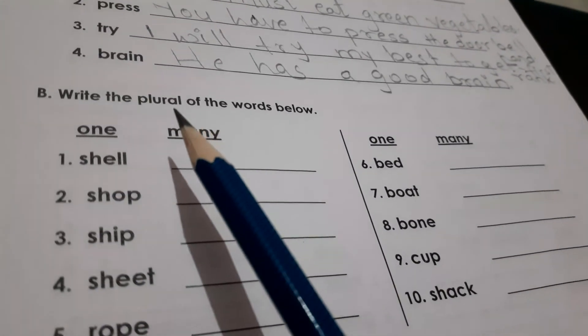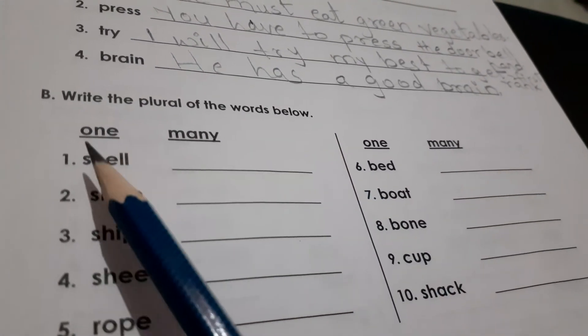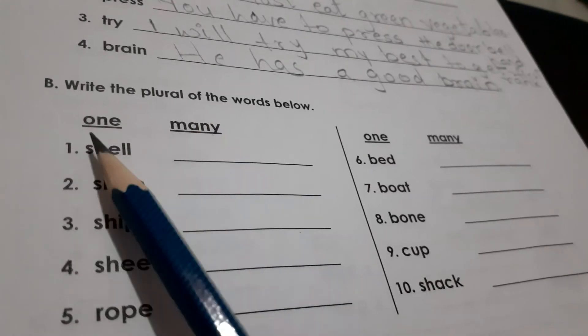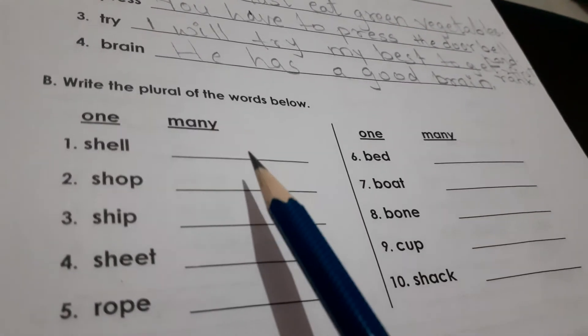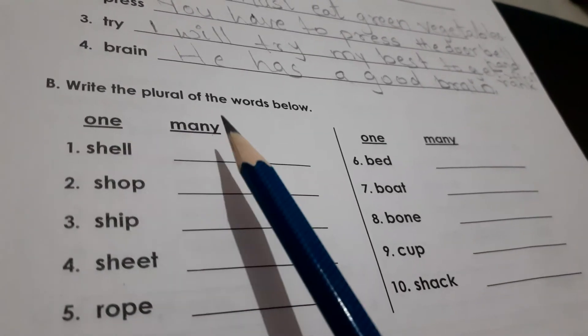Next is Write the plural of the words below. One and many. One is given. You have to write many. Singular and plural.